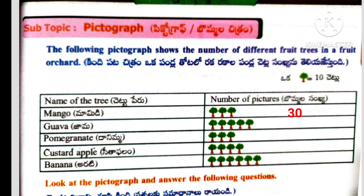Next is guava. Here given five tree pictures, so five tens are 50. Number of guava trees equals 50. Next is pomegranate. Here given three tree pictures, so three tens are 30. Pomegranate equals 30. Next is custard apple. Number of custard apple trees equals 40. And banana — number of banana trees equals 60.